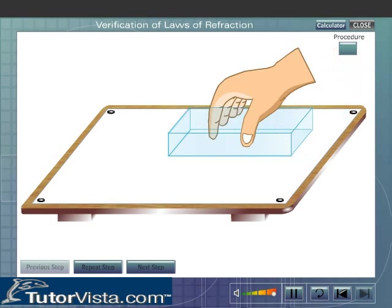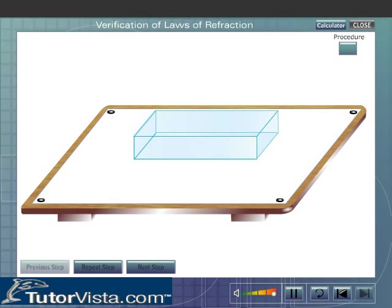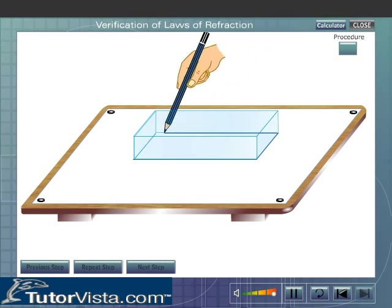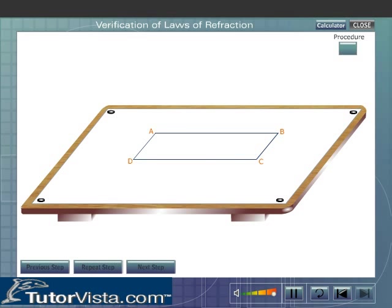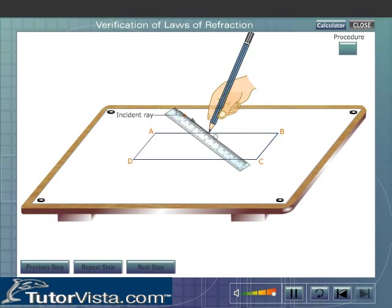Place a rectangular glass slab on a white sheet of paper fixed to a drawing board. Trace the boundary ABCD of the glass slab. Remove the glass slab and draw IO to represent the incident ray.